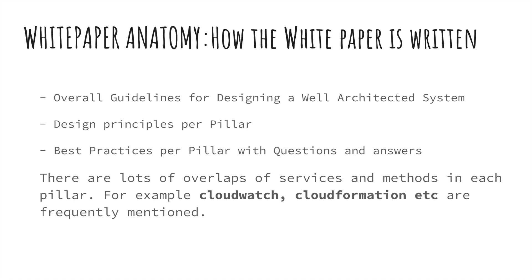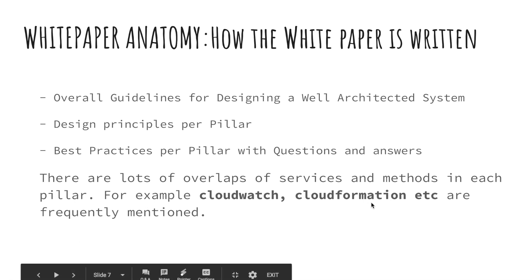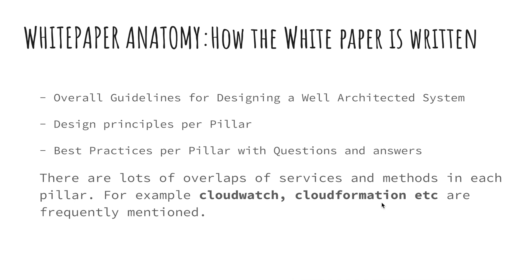Let's quickly talk about the white paper anatomy — how is the white paper written? The white paper consists of overall guidelines for designing a well-architected system and design principles per each pillar. There are lots of overlaps of services and methods in each pillar. For example, CloudWatch and CloudFormation are services featured again and again for best practices and design principles.